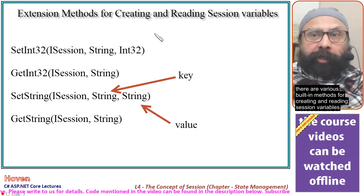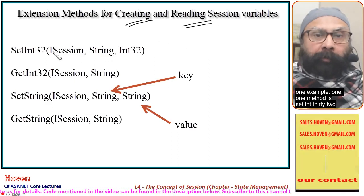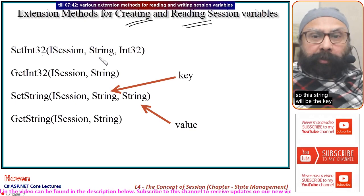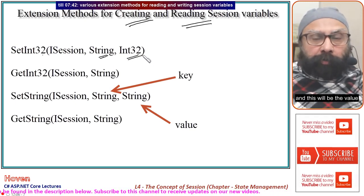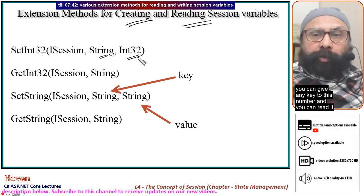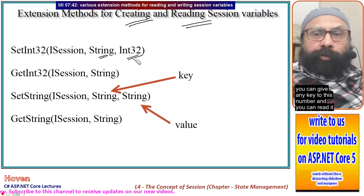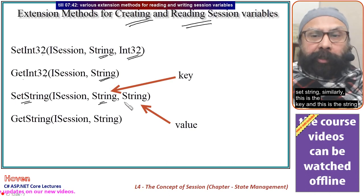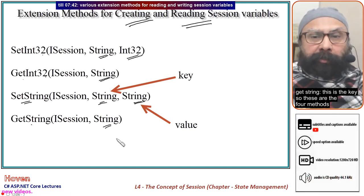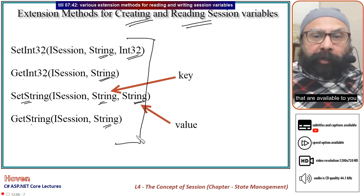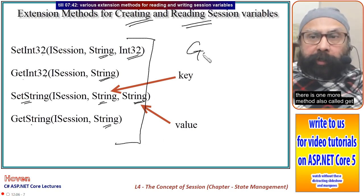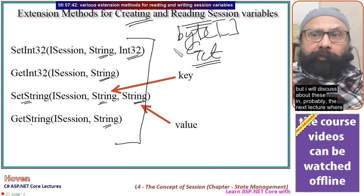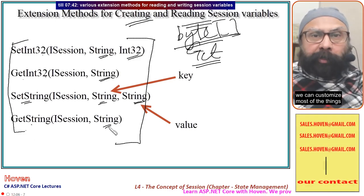There are various built-in methods for creating and reading session variables. For example, SetInt32 is an extension method where the string is the key and the integer is the value — a key-value store. You can read it back using GetInt32 by providing that key. Similarly, SetString takes a key and a string value, and GetString takes a key and returns the string. There is also a general Get method that returns a byte array, which we can discuss in more detail in the next lecture.